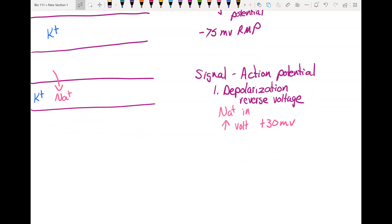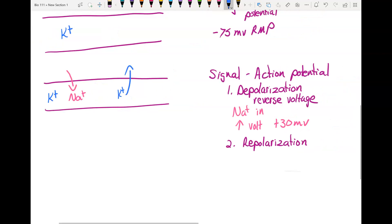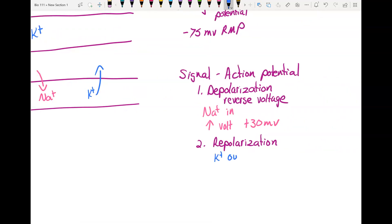The next step of an action potential is repolarization. Now you have to get back to negative 75. Well the way you do this is you let potassium out. So you open potassium gates and potassium goes out. And that reduces your voltage back down to negative 75.